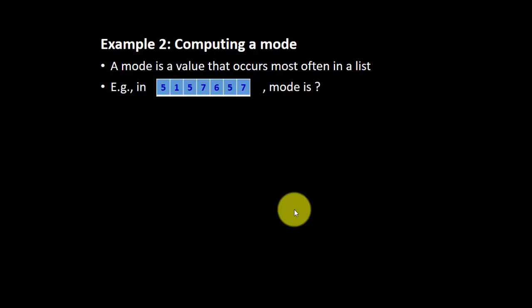Now, let's look at example two. To compute a mode, basically, you want to know what is the most frequent element appear in a list.